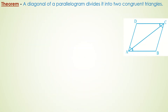Now let us see a theorem based upon this activity, which states: a diagonal of a parallelogram divides it into two congruent triangles. In the figure, it is given that parallelogram ABCD has sides AB and CD parallel to each other, and AC is the transversal.